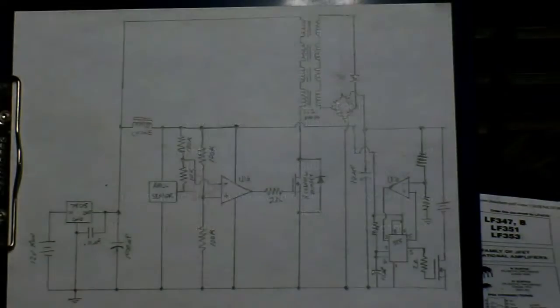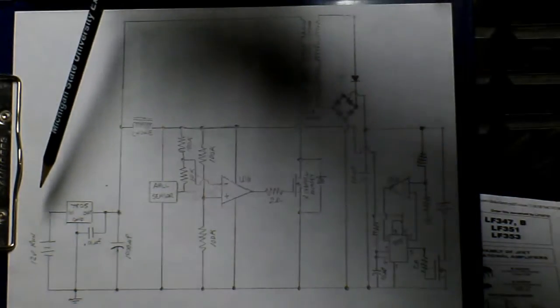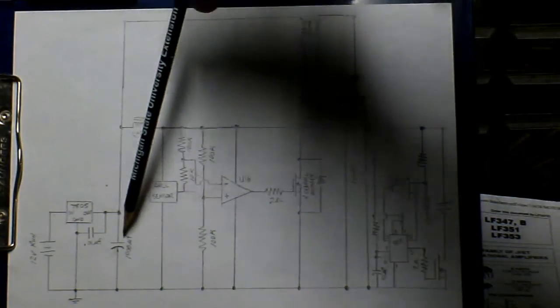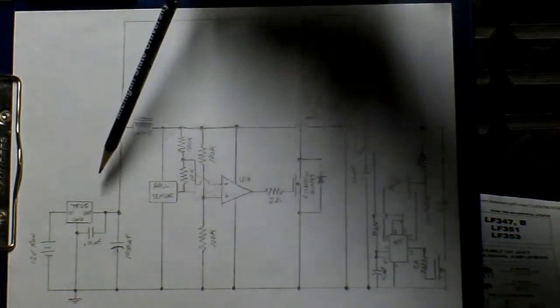Hello, this is a schematic diagram of the unit Bedini-style pulse motor that we're going to look at today. We're running off a 5-volt supply. This is our 12-volt run battery, we're running off a 5-volt supply.